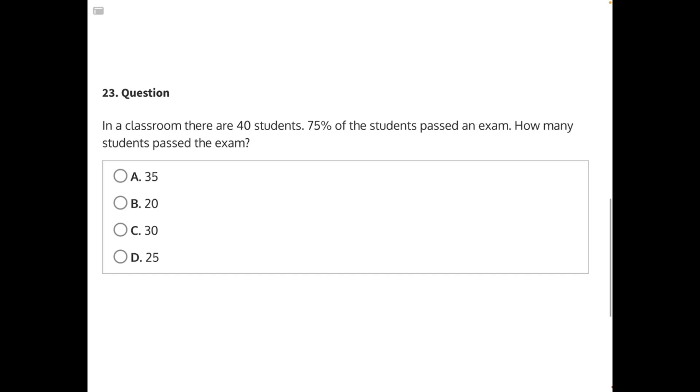You could solve this problem in two different ways. One way is you could find 75% of 40, and of is another one of those keywords in math that means to multiply. 75% times 40.